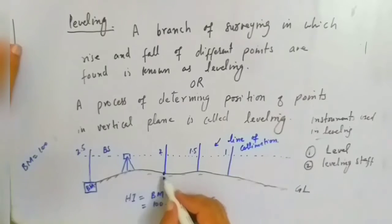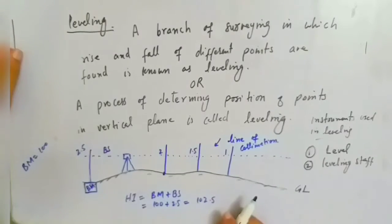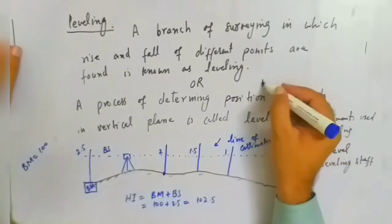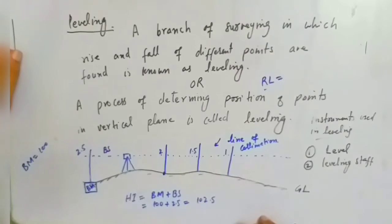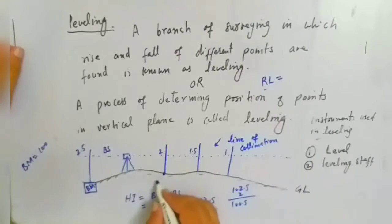So for example here reading is 2, here is 1.5, and here is 1. What will be the elevation of this point? What is reduced level? A point whose elevation is known with respect to mean sea level is called reduced level.